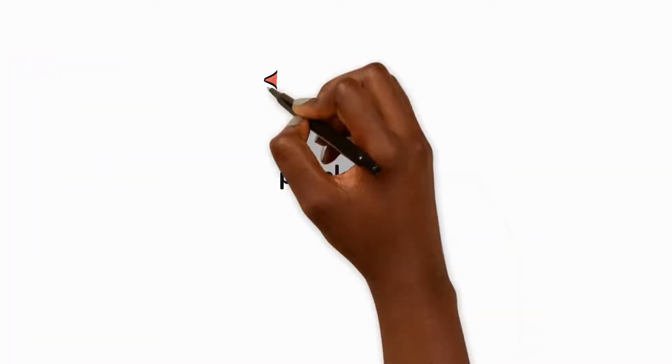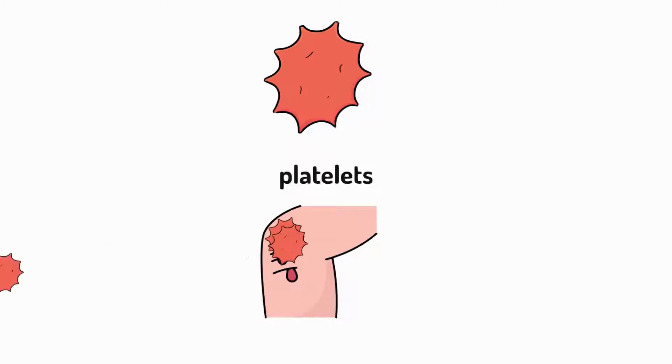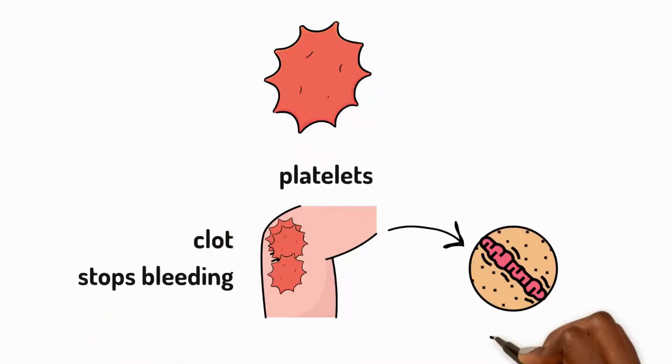Platelets are tiny bits in our blood that form a clot to stop bleeding when we are cut. Eventually, they harden and form a scab.